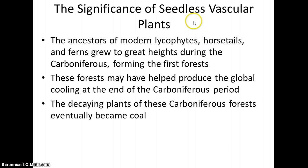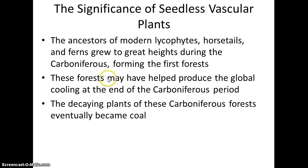The next major evolutionary adaptation is the production of the seed. The ancestors to today's ferns produced vast forests that took up a lot of carbon dioxide and stored it. Once these forests began to decay and became buried, they basically turned into the coal deposits that we now use as part of modern society, beginning with the Industrial Revolution.